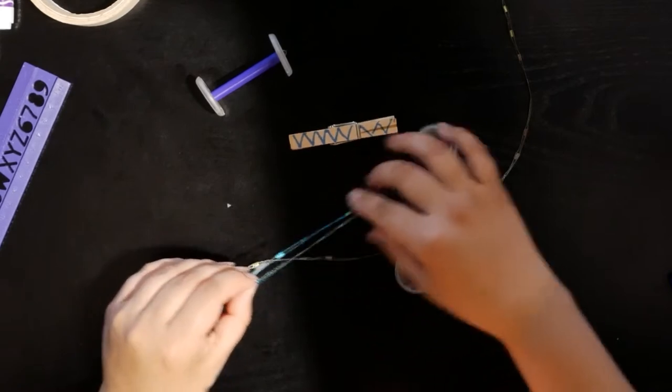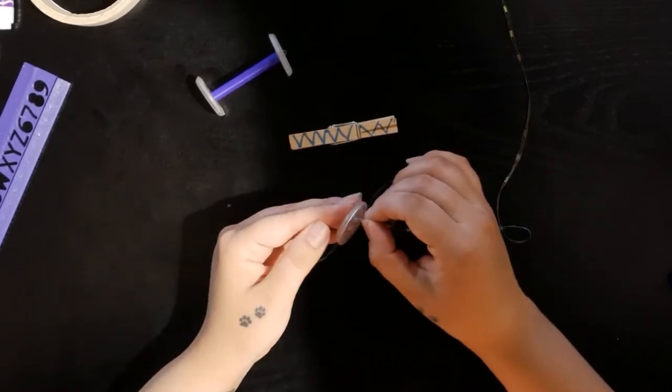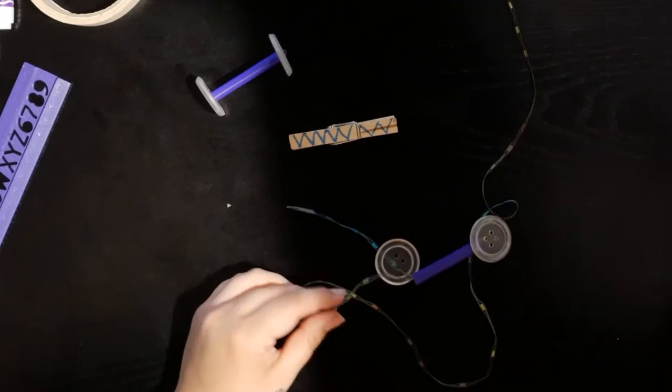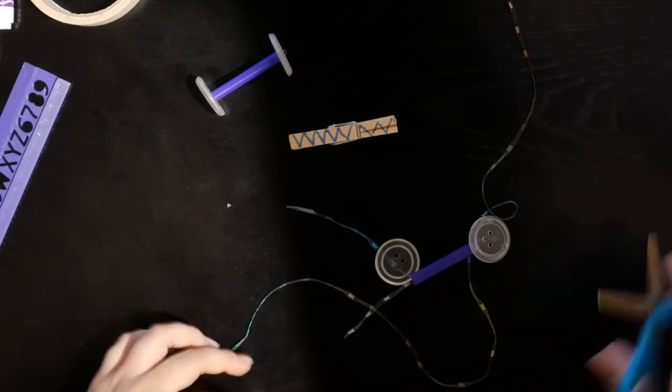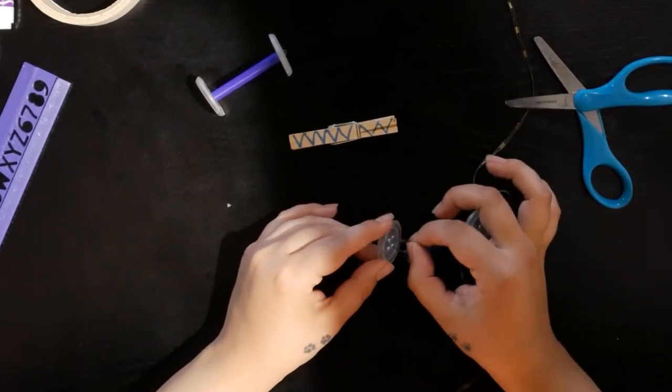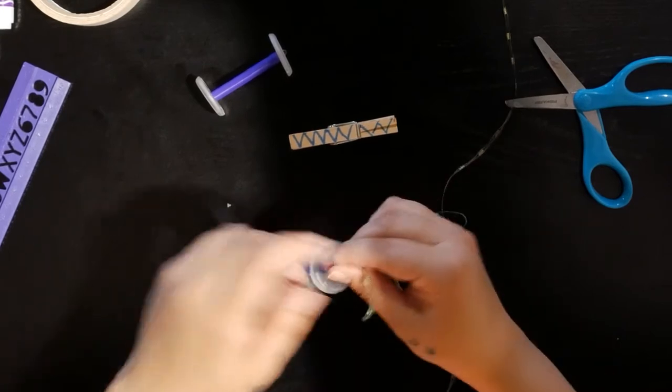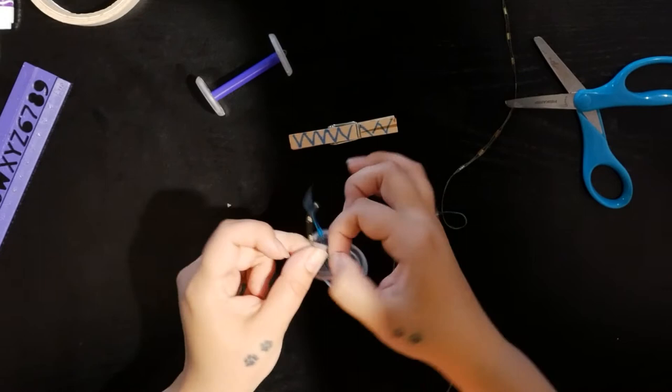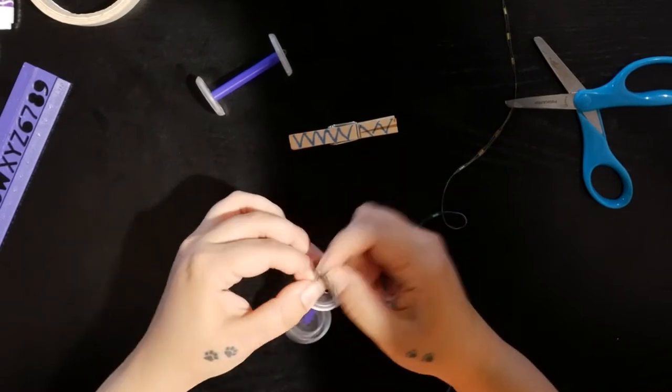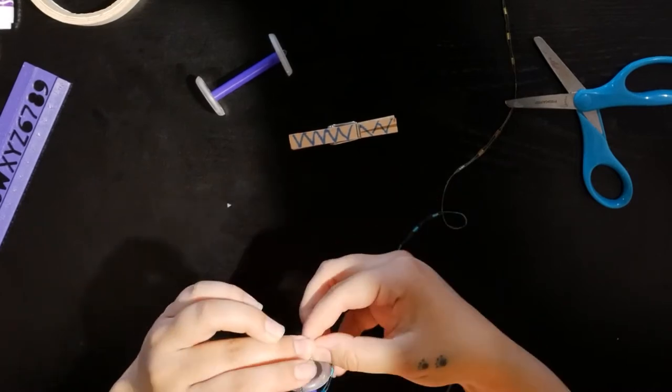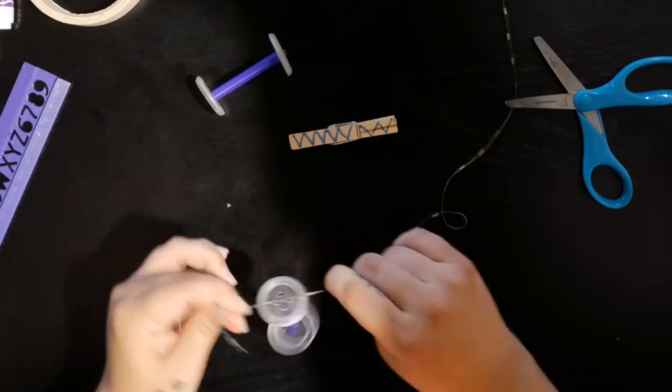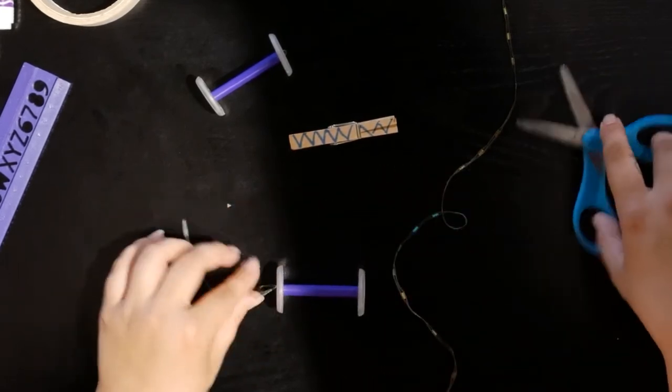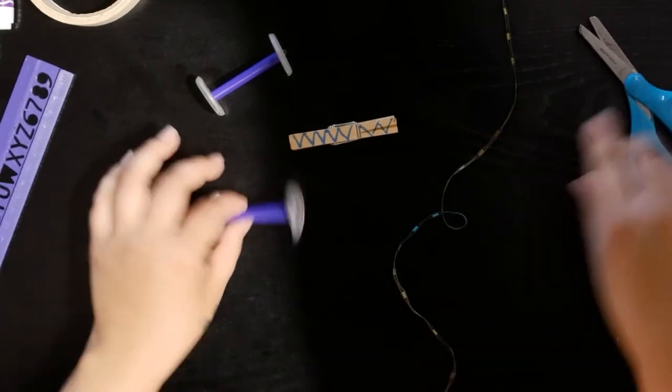Now we're going to thread it through here and do the same thing. Thread this string again diagonal, and then just tie them off together. Make sure you do a very good knot so it doesn't come loose when you're racing them down the ramp. You want to make sure they're pretty close; you don't want any gaps because then they're going to get kind of wobbly. Then you can just trim the excess.